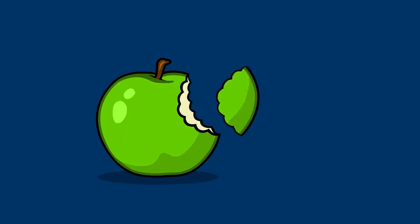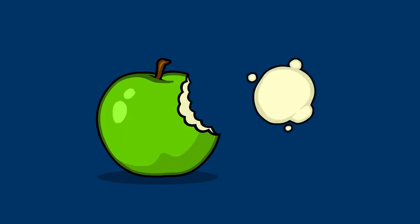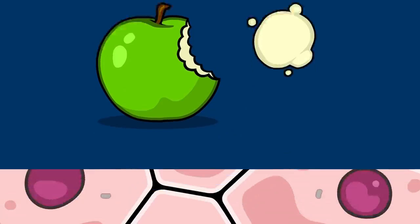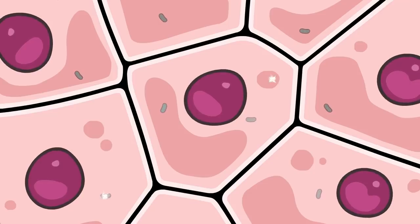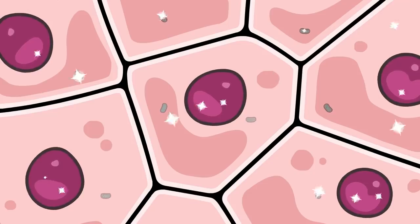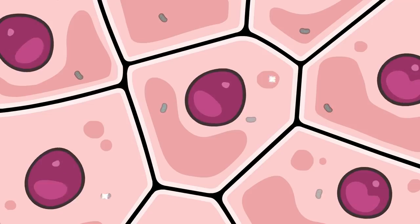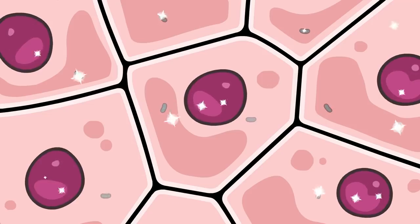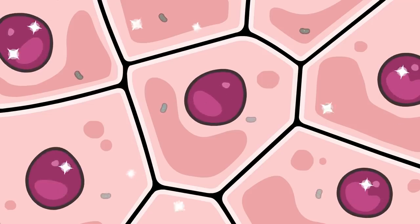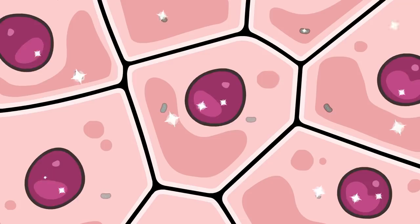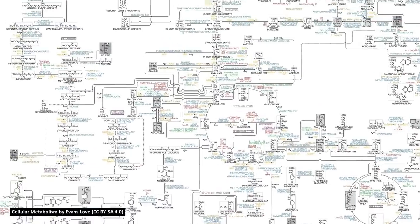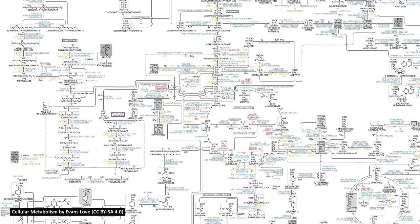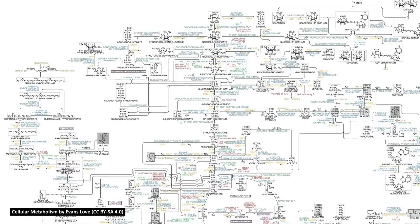When you eat and digest an apple, bits of that apple are given to your cells through the bloodstream. Each cell's metabolism then transforms those apple bits into new parts of the cell. Transforming food into body parts is not easy. As you can see from this metabolic chart, cells perform many carefully controlled chemical reactions.